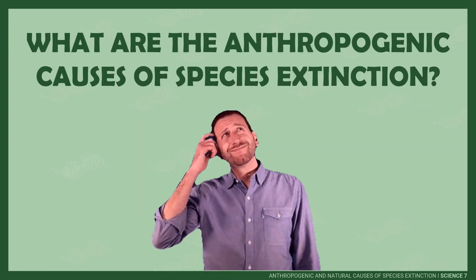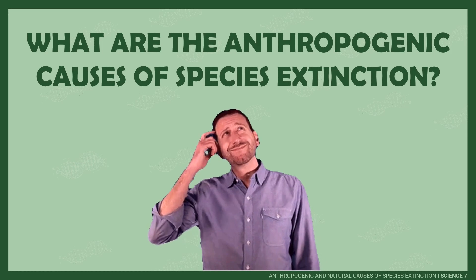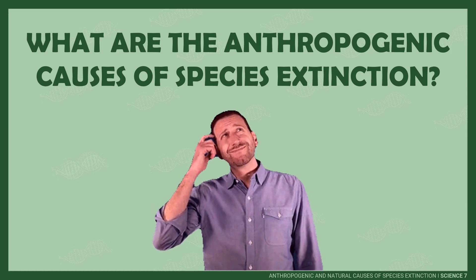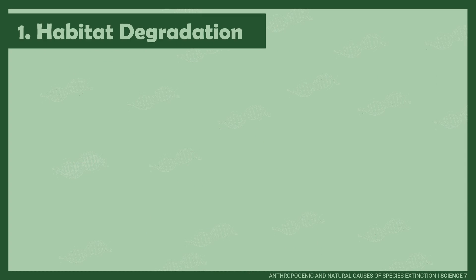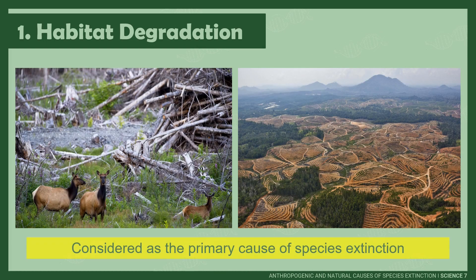This time, let us identify and describe the anthropogenic causes of species extinction. First on the list is habitat degradation. It is considered to be the leading cause of species extinction nowadays. Habitat destruction is caused by man-made activities such as illegal logging or deforestation, fragmentation, and mining. Many species are on the brink of extinction due to habitat loss.